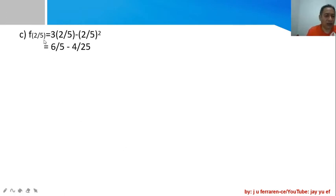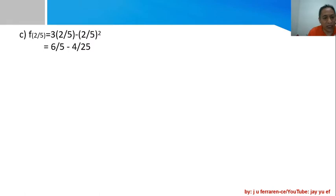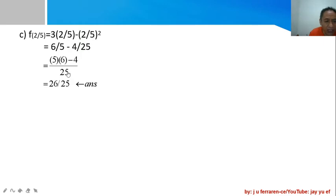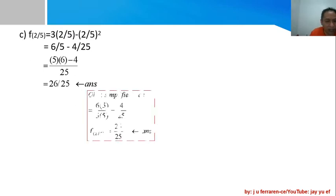For part c, the only difference is that the independent variable value is a fraction. What is the value of the function when x = 2/5? Replacing x with 2/5: the first term is 3 times 2/5, giving 6/5, minus (2/5)² which is 4/25. When subtracting fractions the denominators must be the same, so find the least common denominator. Between 5 and 25 the LCD is 25, giving the equivalent fraction 30/25 minus 4/25, so 30 minus 4 gives 26/25 as the function value.